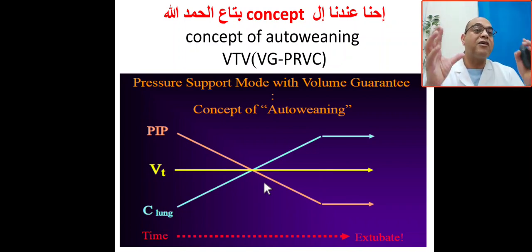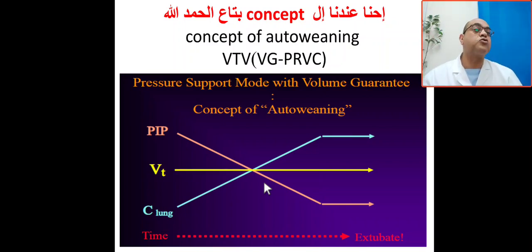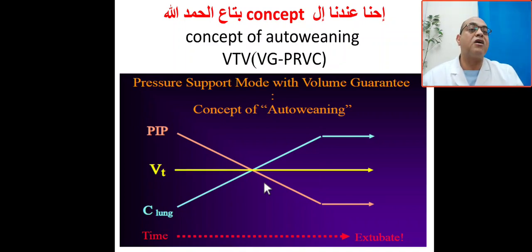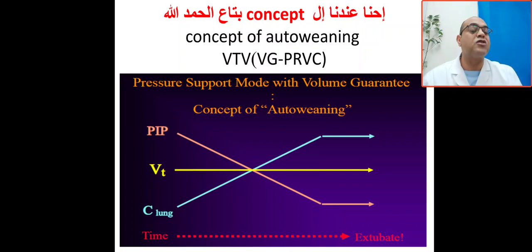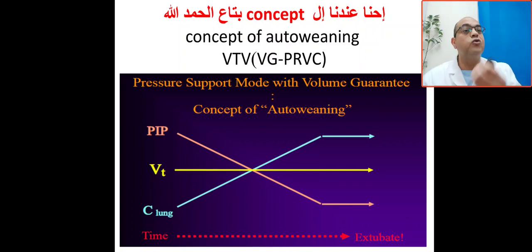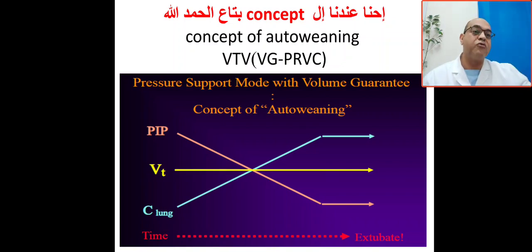To reach the target tidal volume, it will prevent barotrauma because you are using the lowest BIP to reach or achieve the target tidal volume. The target volume is the minimal tidal volume, so it will prevent volutrauma and help for lung protective strategy and lung recruitment.